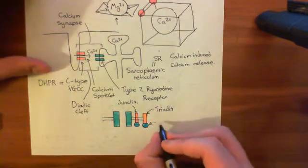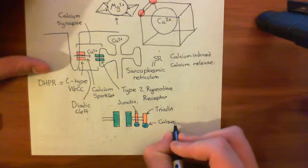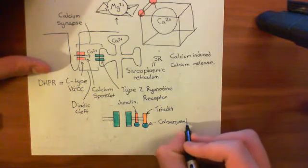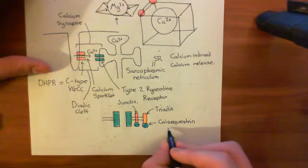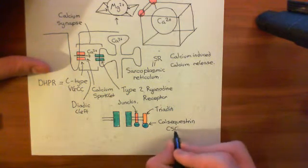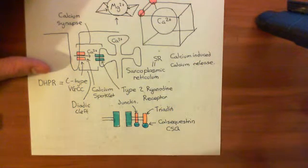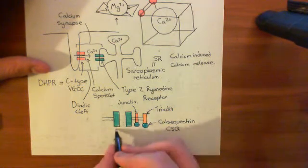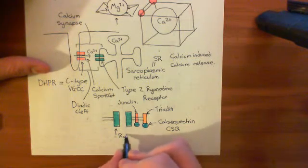This blue protein here is calsequestrin, often abbreviated to CSQ for short. Calsequestrin is bound to calcium, and this keeps lots of calcium nice and close to the type 2 ryanodine receptor.